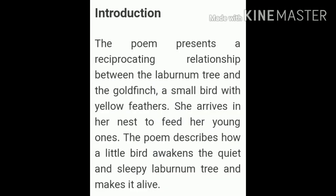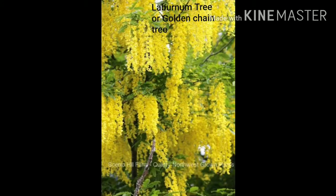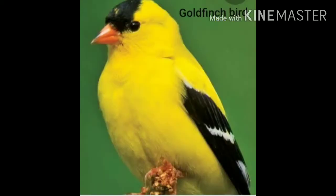This poem presents a reciprocating or mutual relationship between the laburnum tree and the goldfinch bird. The laburnum tree is a short tree with hanging branches, yellow flowers and poisonous seeds. But this tree looks very beautiful because of its yellow flowers and hanging yellow branches, so it is also called the golden chain tree. The goldfinch is a small singing bird with yellow feathers on its wings. What is common between the two? They are yellow in colour.